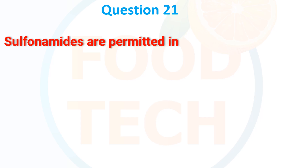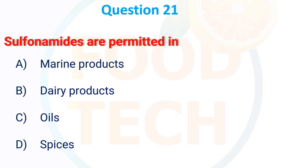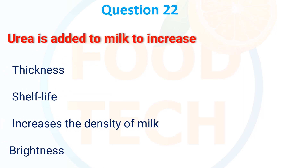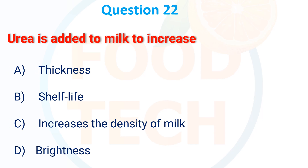Sulphonamides are permitted in: A. Marine products, B. Dairy products, C. Oils, D. Spices. The correct answer is marine products.